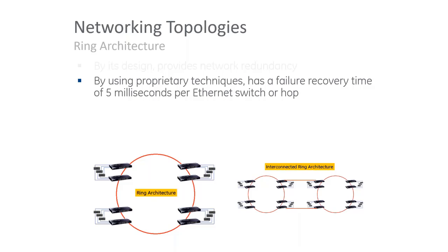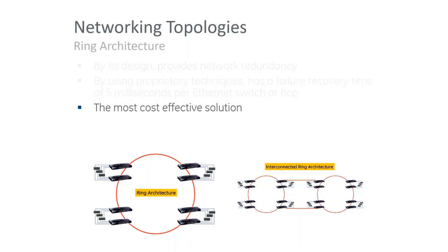There is still a recovery time with ring architecture. If there's a break in one connection, the communication is maintained by the other part of the ring. However, RSTP recovery can be up to five milliseconds. It is the most cost-effective solution compared to redundant star or mesh, since you don't need additional switches or additional communication cables.